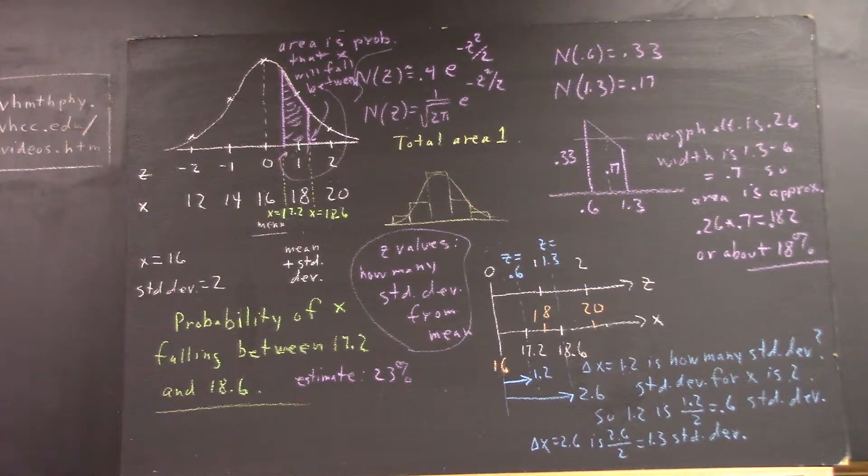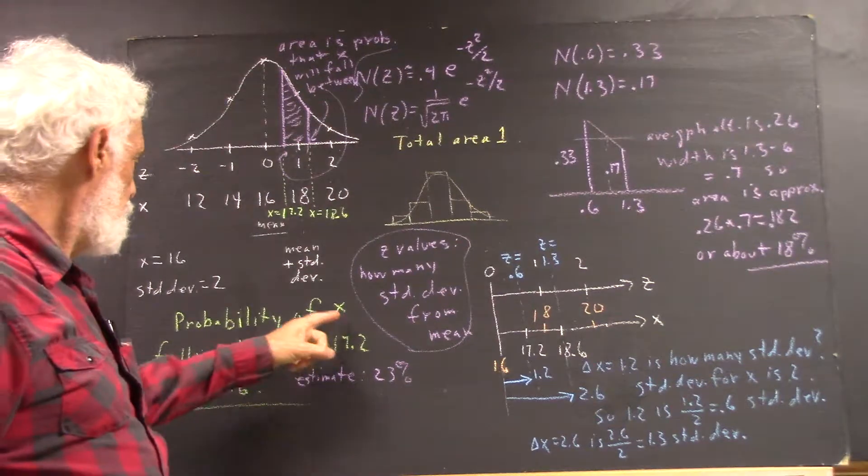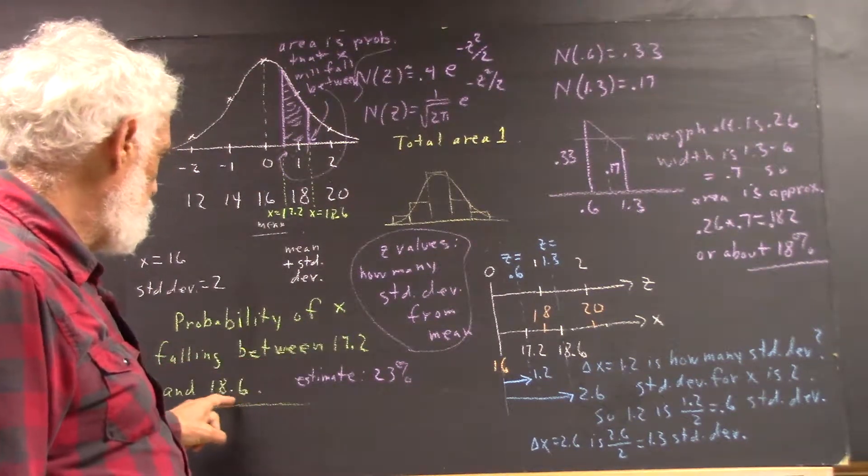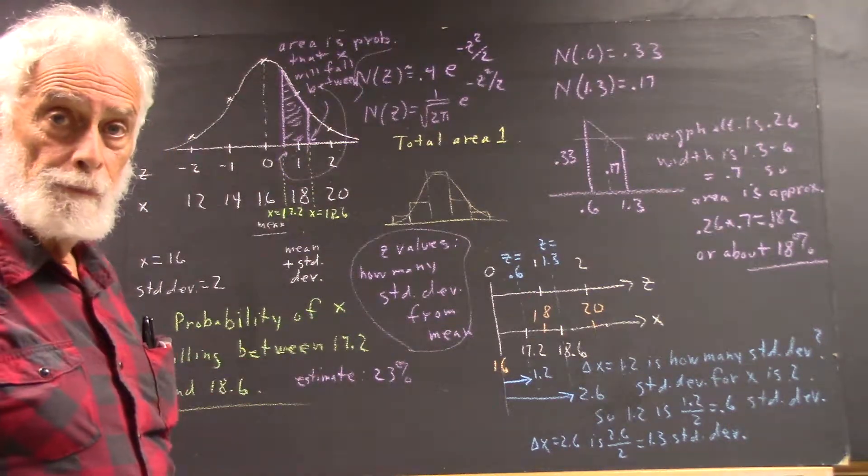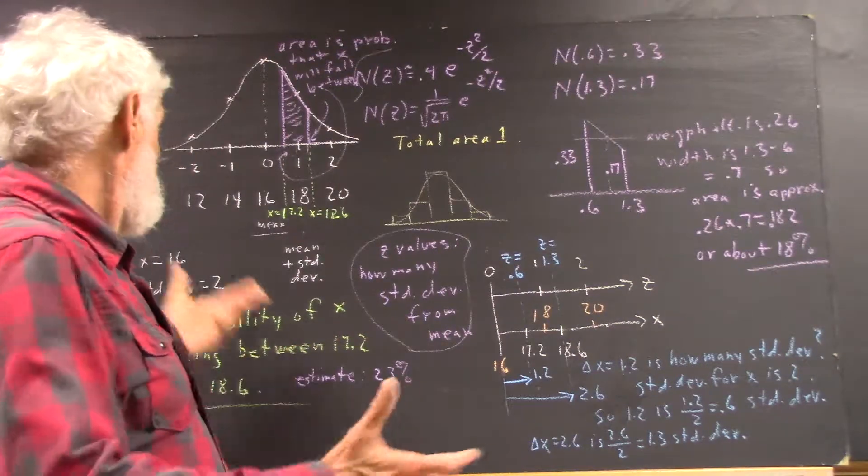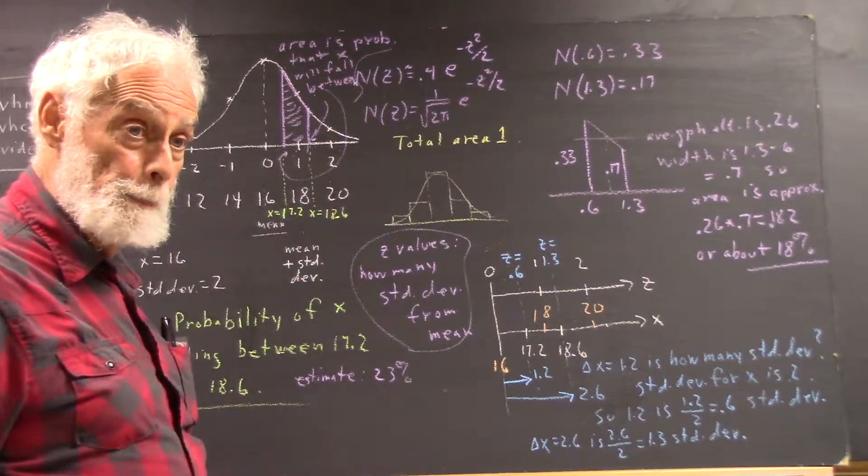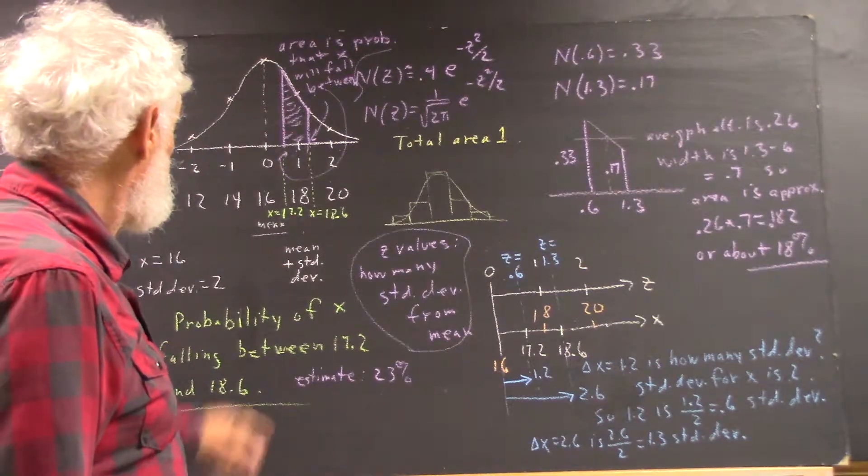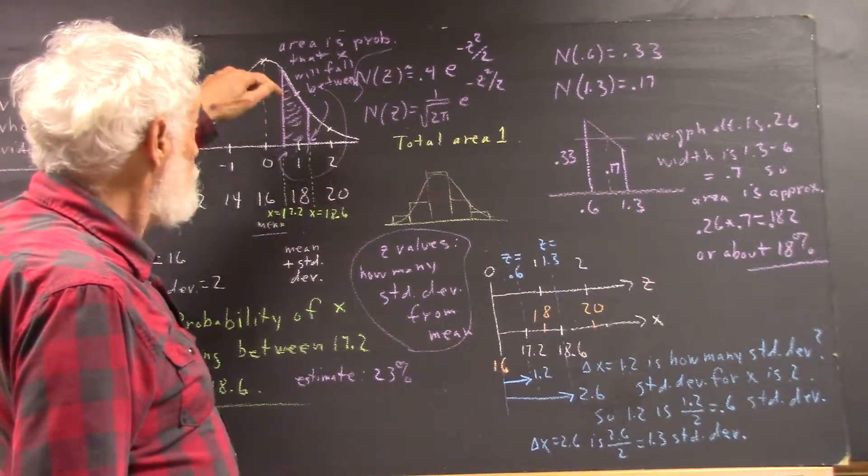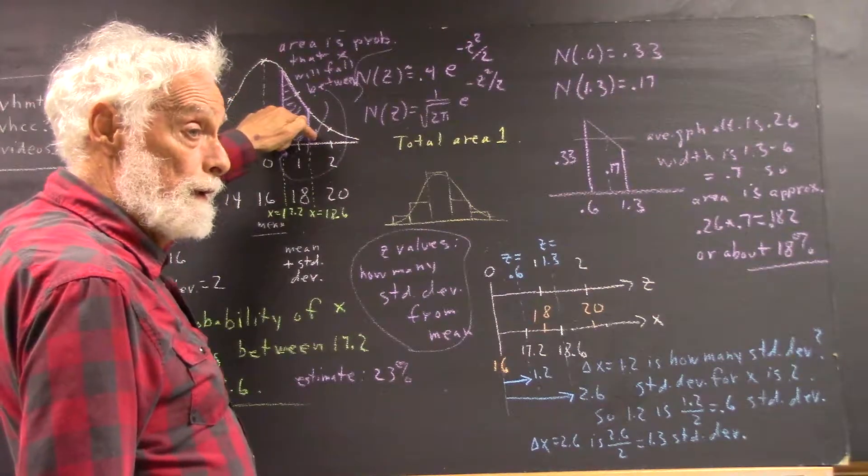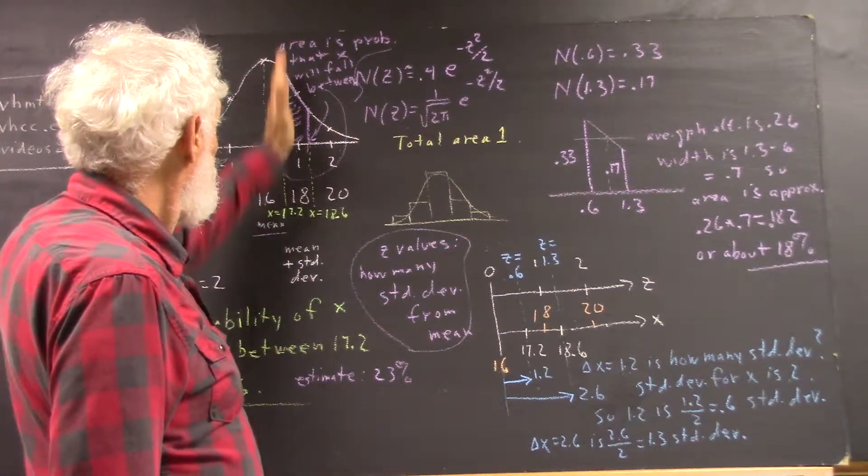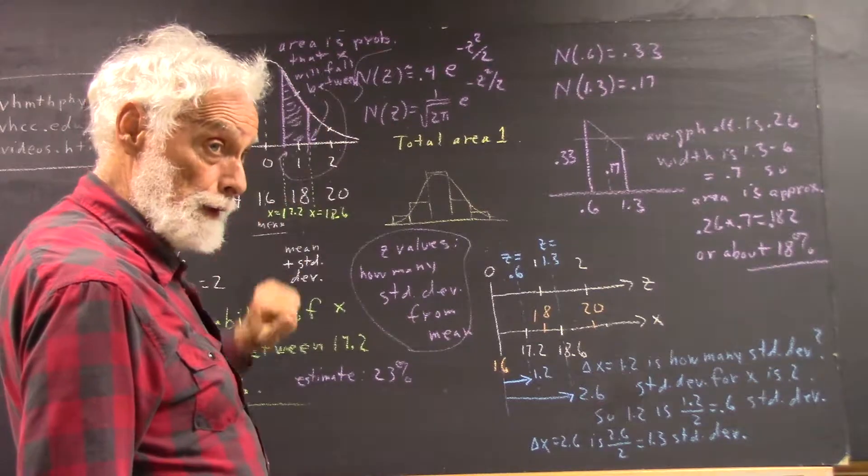Now, we want to find the probability that x falls between 17.2 and 18.6. So if I take a SIP, what's the probability of that SIP lying within this range? Well, that probability is just equal to the area of this region of the curve, the region that you get between this value of x and this value of x.